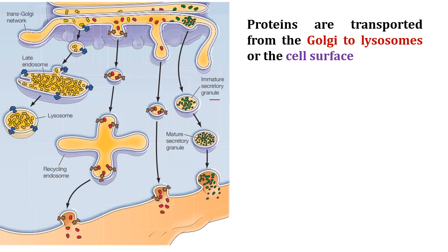The first route: proteins can be targeted to the late endosome, which then develops into the lysosome. The second route is the simplest — it is the direct transfer of protein from the trans-Golgi network to the plasma membrane.